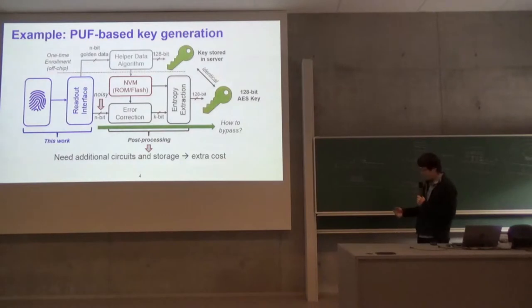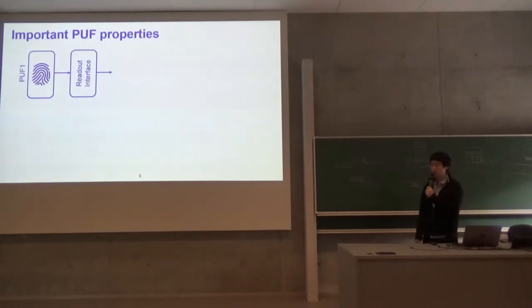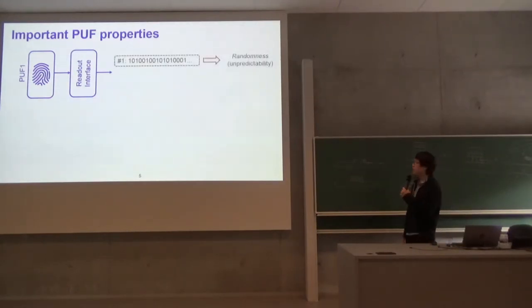The parts that make the chip output stable and have full entropy, we call this post-processing. The question now is, can we bypass this post-processing? This post-processing needs additional circuit and storage, which means extra cost. In this work, we would like to improve the PUF property itself to make it intrinsically better without needing post-processing anymore.